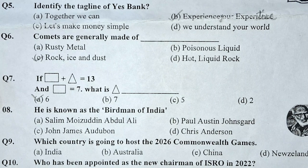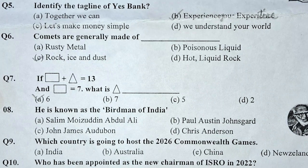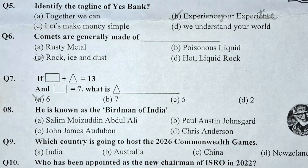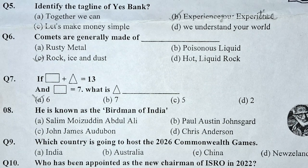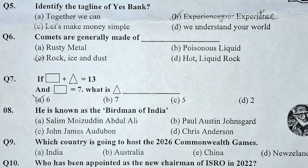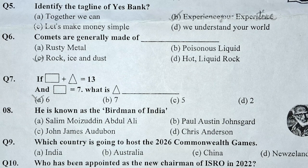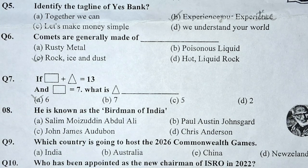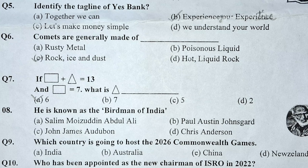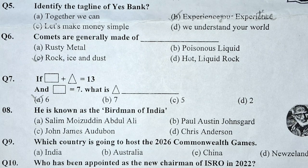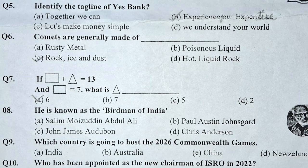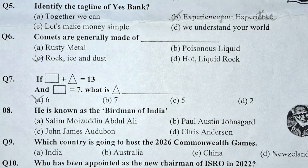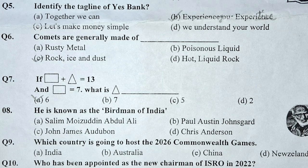Question number 5: Identify the tagline of Yes Bank. Question number 6: Comets are generally made of dash.